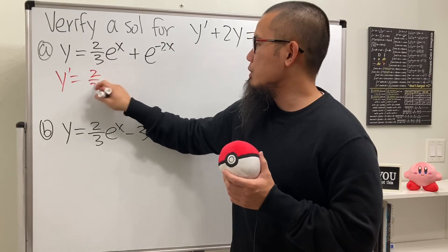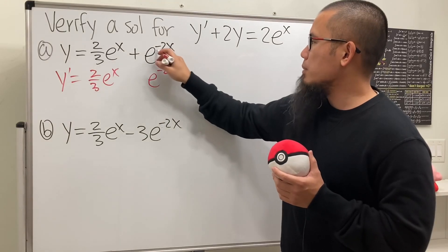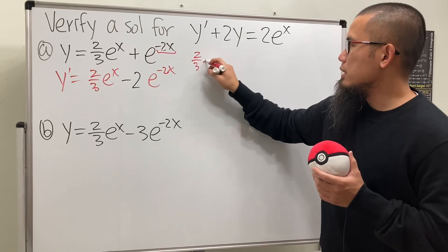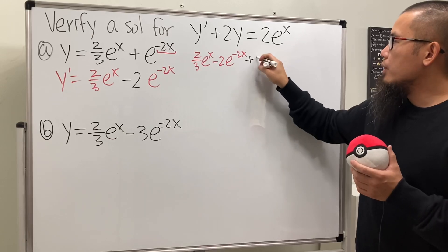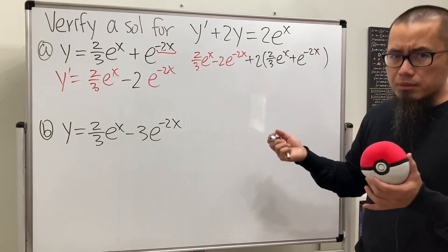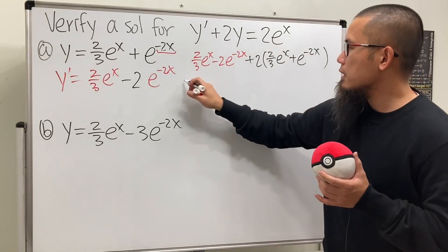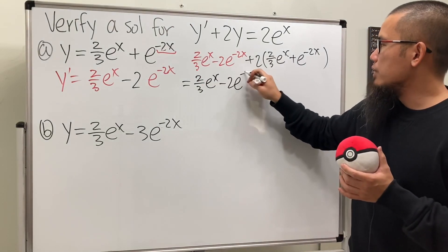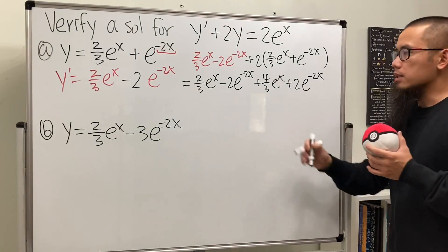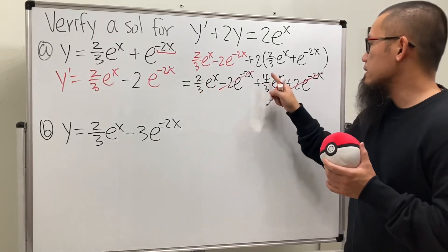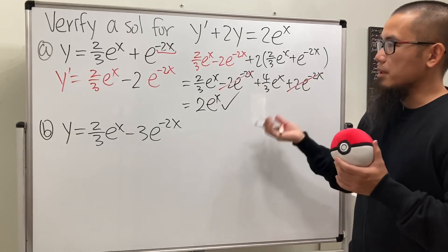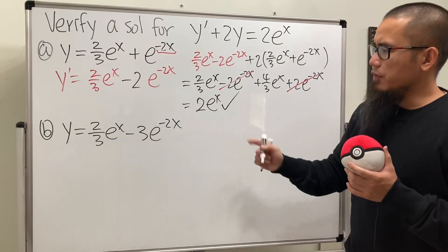For the first solution, y prime is 2/3 e^x, then differentiating the e^(-2x) term gives negative 2 e^(-2x). Plugging in: y prime plus 2y gives (2/3 e^x - 2e^(-2x)) + 2(2/3 e^x + e^(-2x)). Distributing: 2/3 e^x - 2e^(-2x) + 4/3 e^x + 2e^(-2x). The e^(-2x) terms cancel, and 2/3 + 4/3 = 6/3 = 2, giving 2e^x. This checks out — the first function is a solution.